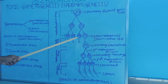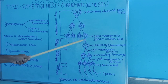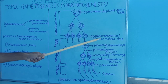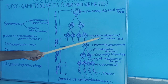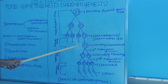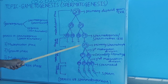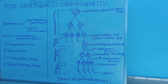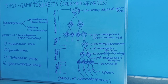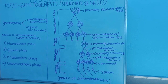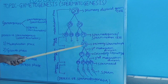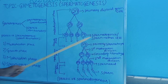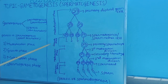In the growth phase, no division occurs. Only the size of the Spermatogonia, or sperm mother cell, increases by consuming nutrients from the supporting cells. This supporting cell is called Sertoli cell, and the enlarged cell forms the primary Spermatocyte.